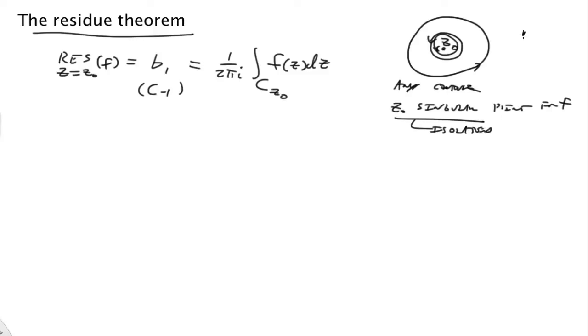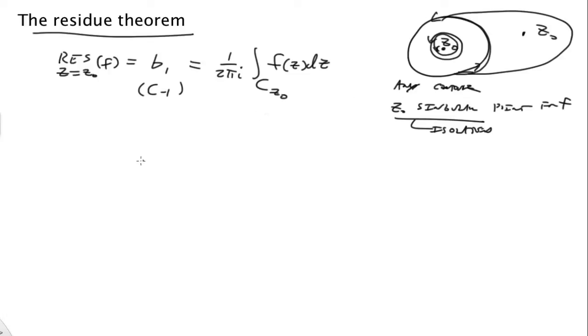If there's some other point z2, and the contour enclosed both of those points, it wouldn't be the residue. What we have to do is limit ourselves to contours that only enclose that singular point.